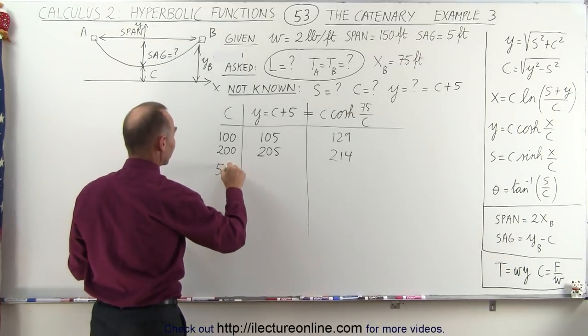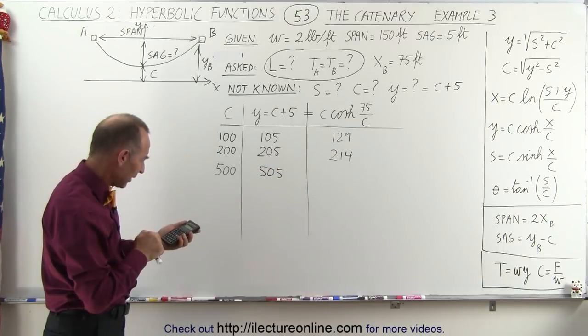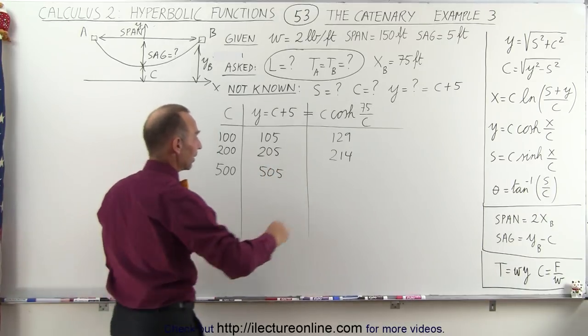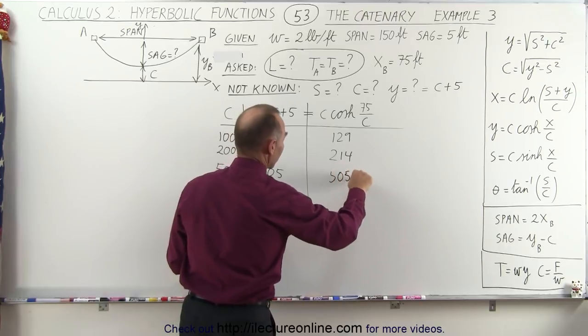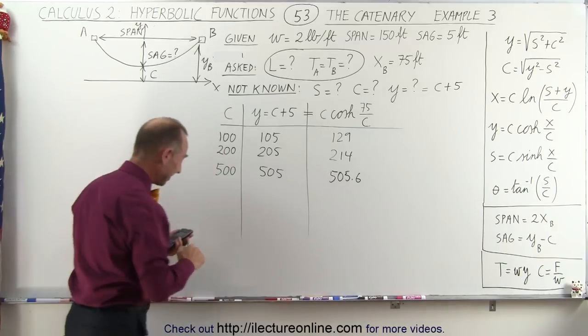So let's try 500 and see what we get. So that will be 505. And now we get 505.6. We're getting really close. But it's still too large because we're trying to get to 505. We got 505.6.